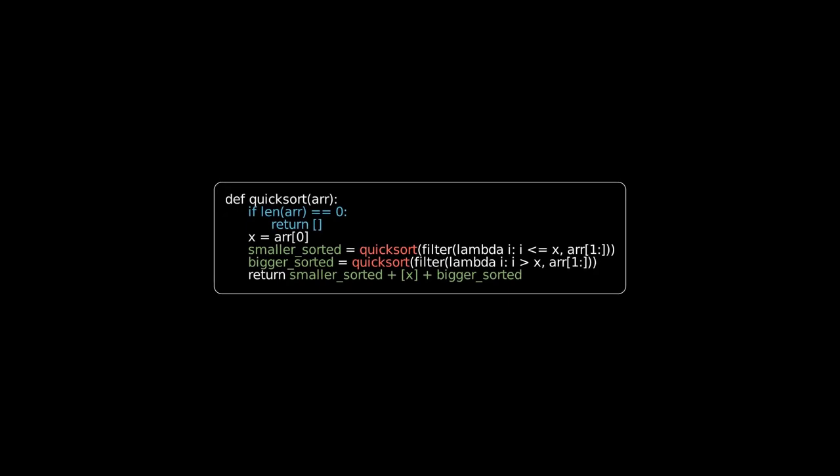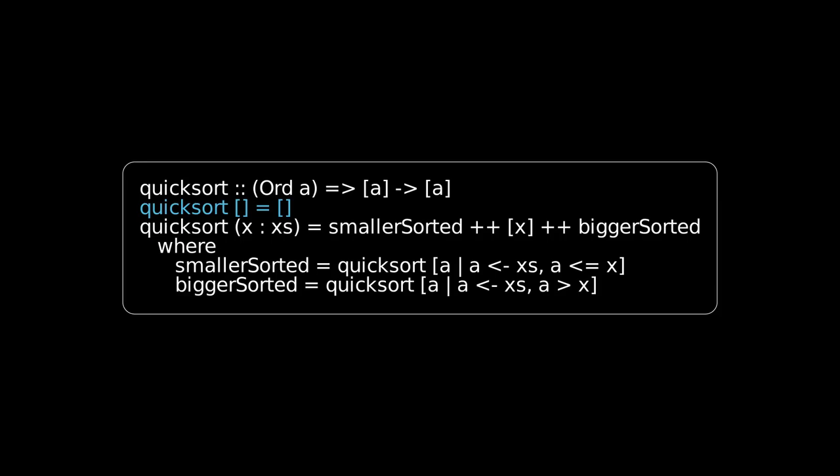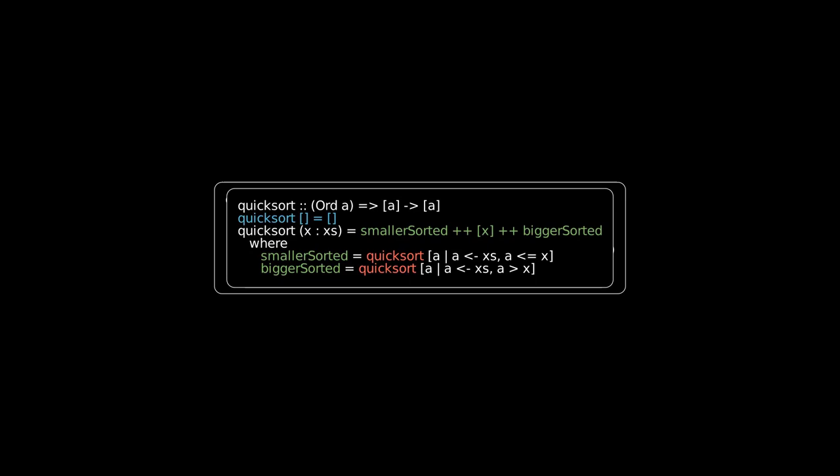We can replicate this same approach in Haskell. First, we set up our base case. Then, we filter the two sides of the list, quicksort each side, and then combine them together. These definitions are nice and compact, and they give us a powerful algorithm with very little code.